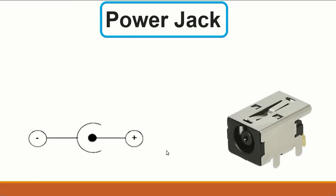Then we have the power jack or DC jack. The DC jack could have two terminals or three terminals. For example, some HP laptops have three terminals: the ground, the positive terminal, and an ID terminal for charging the battery. This is the symbol for a normal DC jack with two terminals — positive and negative.